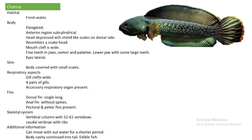The body is covered with small scales. The gill clefts are widely open. Four pairs of gills are present. An accessory respiratory organ is also present in this fish. Regarding fins, the dorsal fin is single and long. The anal fin is without any spines. The pectoral fin and pelvic fin are present. The vertebral column has 52 to 61 vertebrae. The caudal vertebrae have ribs.